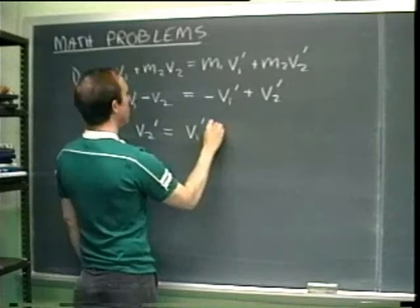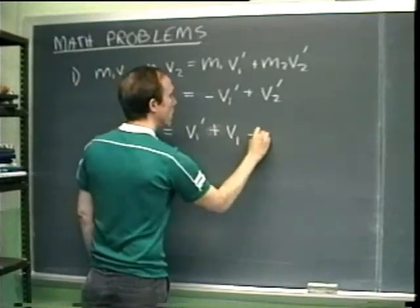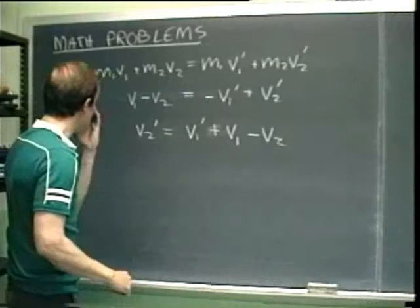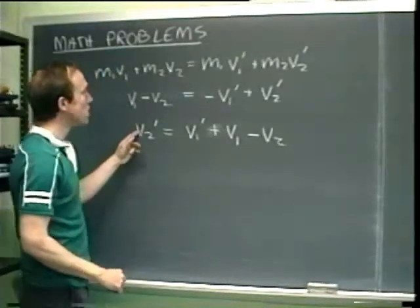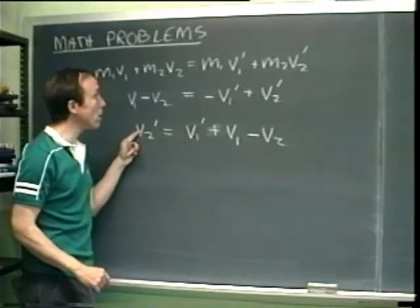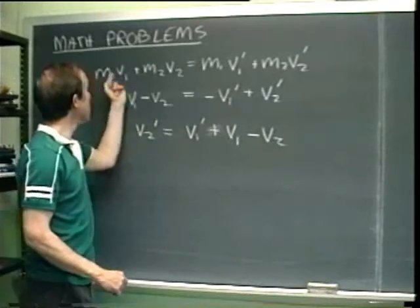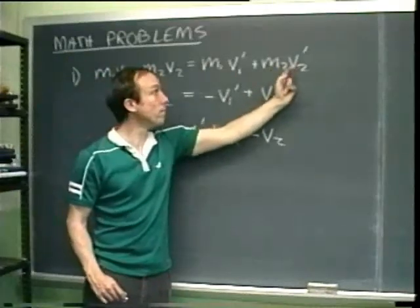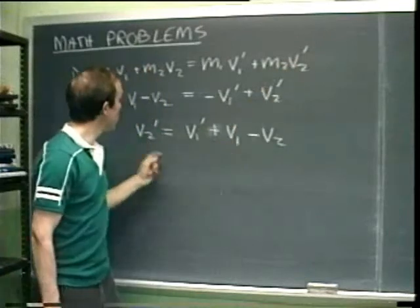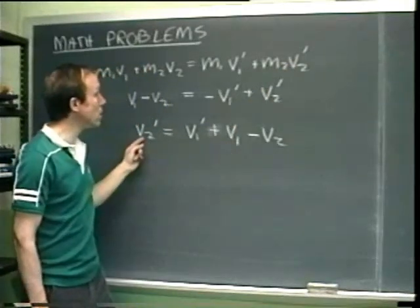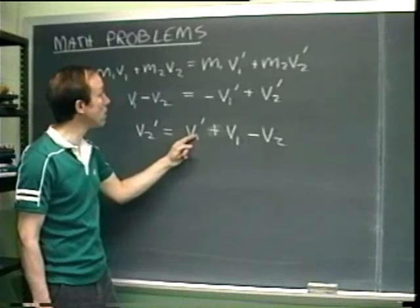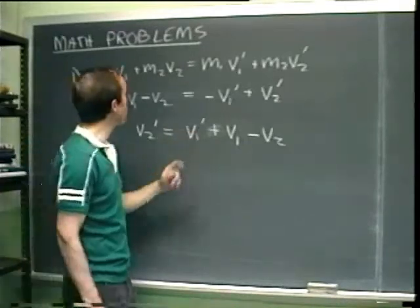Adding V1 prime to both sides gives us V2 prime equals V1 minus V2 plus V1 prime. Then substitute this expression for one of the unknowns into the other equation wherever you see that unknown. The new equation that develops will only have one unknown — in this case, it will only have V1 prime.